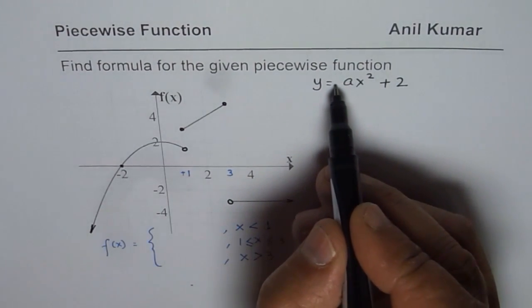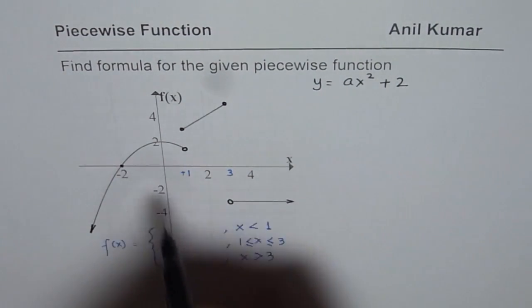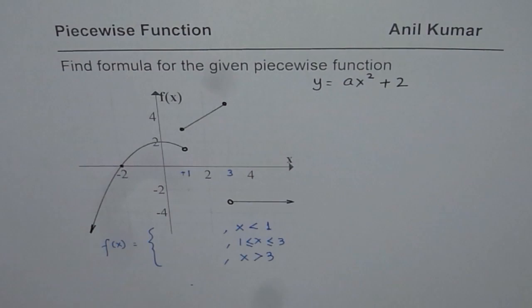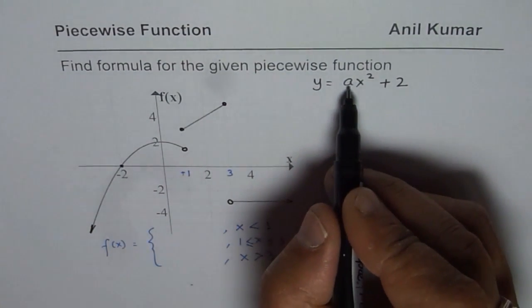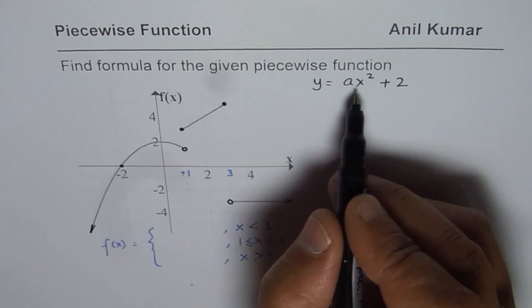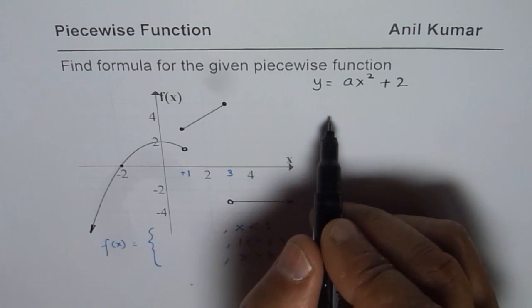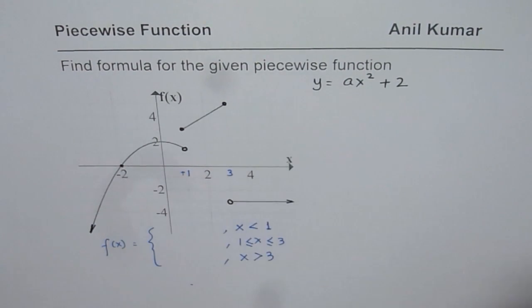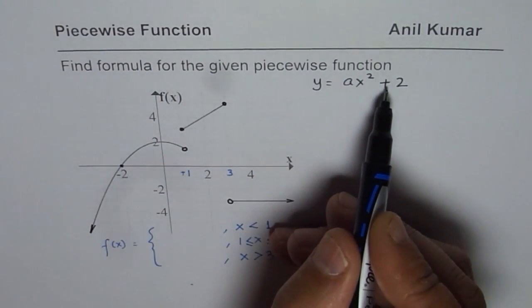Some of you can start with minus ax square since this is downwards. But generally, we can just write a and now the question is, let us use another point to find the value of a. So if you start with a, even then you are going to get the right answer. So I will continue with ax square plus 2.